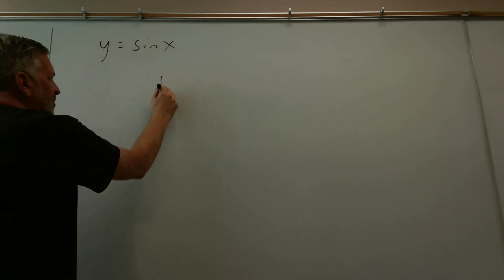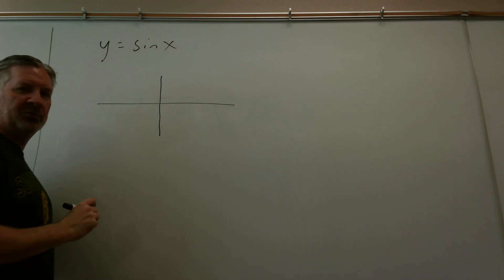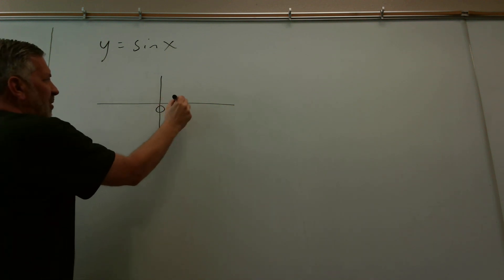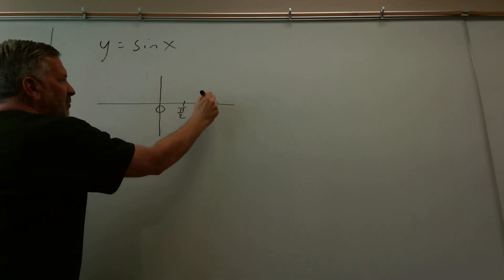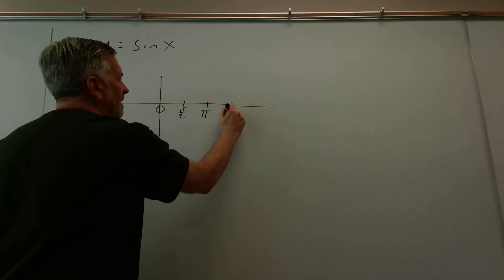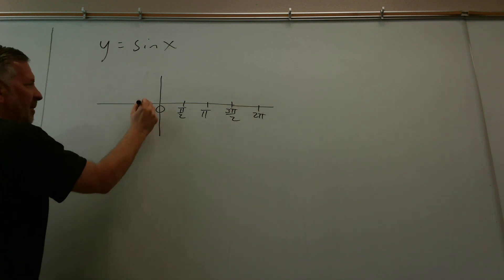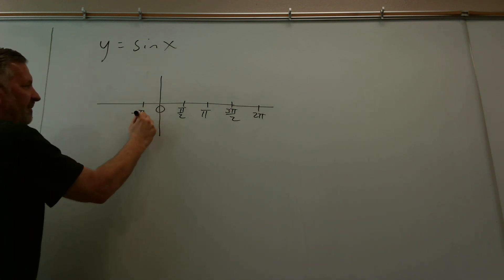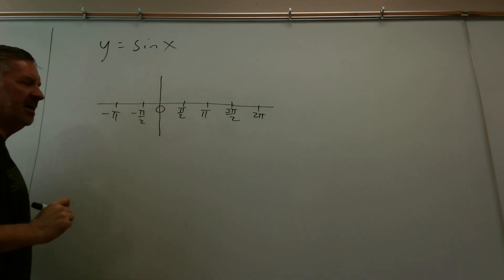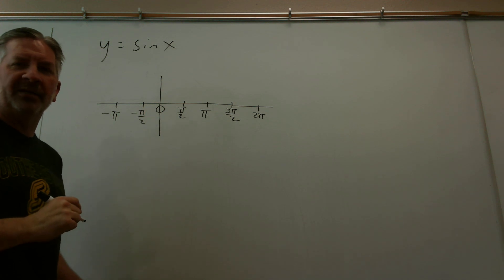Something important happened on the graph every pi over two radians. So I'm going to mark off my axis like we did before: zero, pi over two, pi, three pi over two, two pi, and let me go a little bit on the left of the origin — minus pi over two, minus pi. So something important happened on the sine graph every pi over two radians.